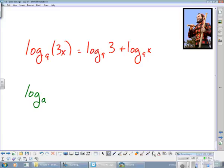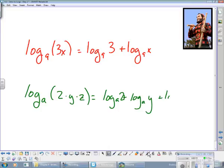Here's another example. Let's say we have log base a of 2 times y times z. Then again, that's the product. It's just going to equal the sum of the logs of each factor. So that's going to be log base a of 2 plus log base a of y plus log base a of z. And that's your answer.